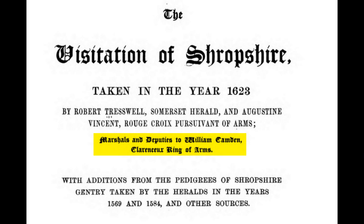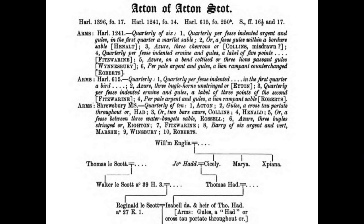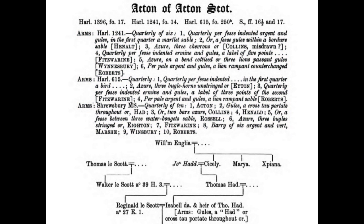It says they are marshals and deputies to William Camden, the King of Arms during this time period. You'll also see that this book, published in 1623, contains data from 1569 and 1584. Here is one of the families — the Actons — and they have three coats of arms. Look at all that information they have entered. It's like its own language. Here's the color azure being mentioned, and here are three lions that they talk about. You can see just how detailed this is.